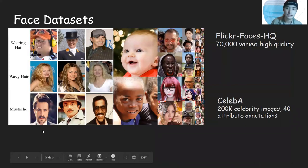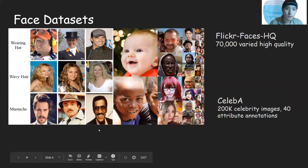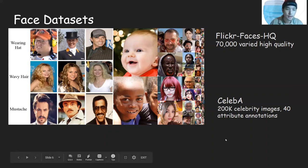There are also some face datasets. For example, Flickr Faces HQ, which are crawled and cropped from Flickr with high resolution images. And there is also the CelebA dataset, where every image has more than 40 attribute annotations.